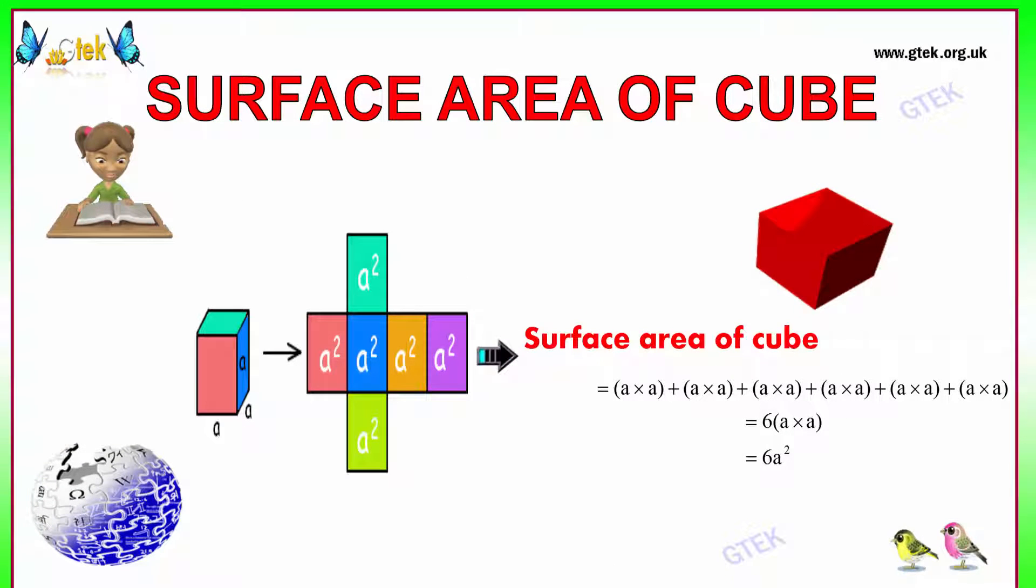The first thing is the surface area of a cube. Surface area of the cube is nothing but first you should understand about the square. For a square, the surface area is A square. If the width is A, the area of the square is A square. For the cube we got 6 sides: 1, 2, 3, 4, 5, and 6. So A square plus A square, A square, A square—6A square. The surface area of the cube is 6A square.